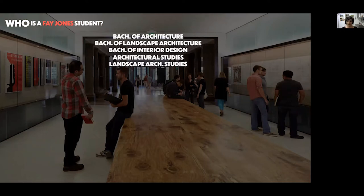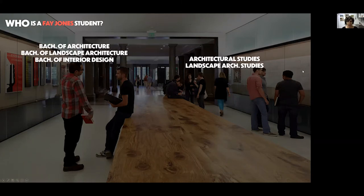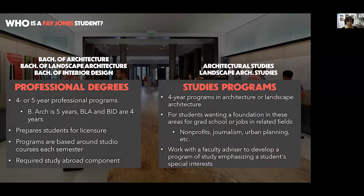In talking about the differences between our majors, what it really breaks down to are the professional programs versus the studies programs. Our two major types fall into the areas of professional degrees and studies programs. The Bachelor of Architecture, the Bachelor of Landscape Architecture, and Bachelor of Interior Design are our professional programs, while Architectural Studies and Landscape Architectural Studies fall into the studies program. The main thing to know about the professional programs is that they prepare you for licensure in the field of architecture, landscape architecture, or interior design.